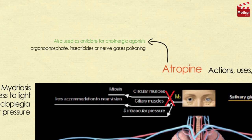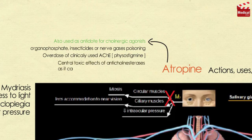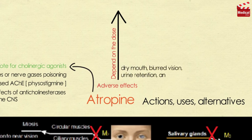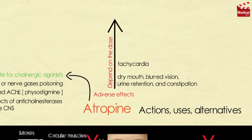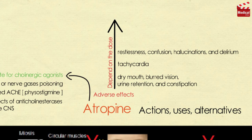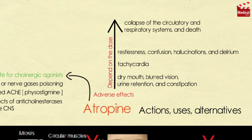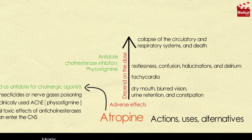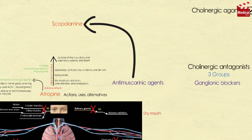Atropine can be used as an antidote for cholinergic agonists in cases of organophosphate insecticide or nerve gas poisoning and overdose of clinically used anticholinesterases such as physostigmine. It can also be used in treating central toxic effects of anticholinergic drugs as it can enter the CNS. Adverse effects of atropine depend on the dose and may include dry mouth, blurred vision, tachycardia, urine retention, and constipation. CNS effects include restlessness, confusion, hallucinations, and delirium, which may progress to circulatory and respiratory collapse and death. Low doses of cholinesterase inhibitors such as physostigmine may be used as antidote for atropine toxicity.